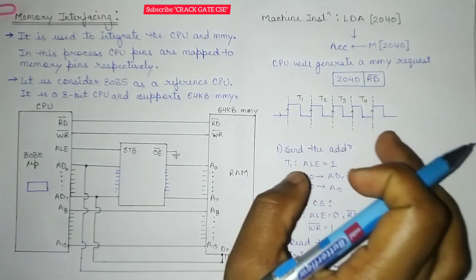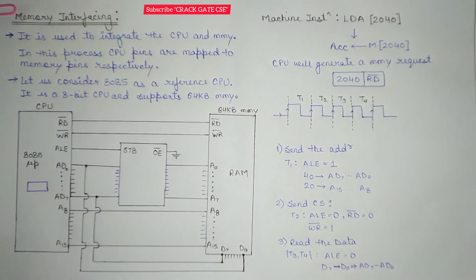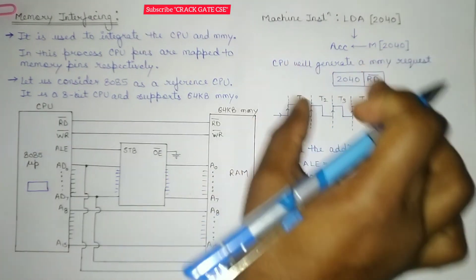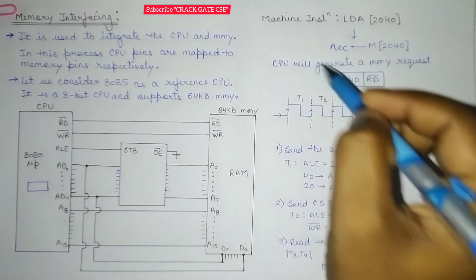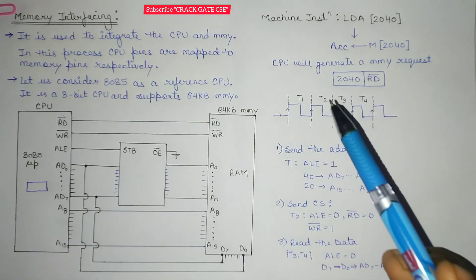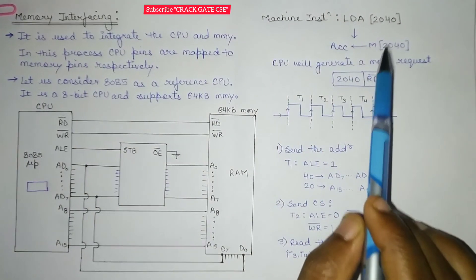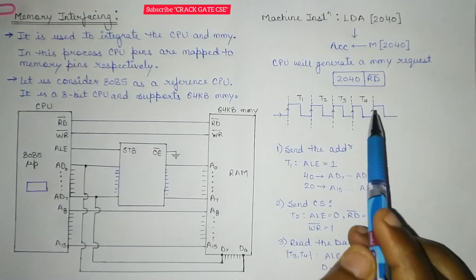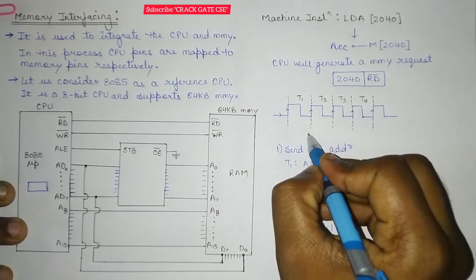There are some cycles required to perform any instruction. These cycles are known as machine cycles, because the execution of any instruction takes some CPU cycles to complete the operation. Whatever the time taken to execute a particular instruction — whether it is three cycles, four cycles, or any number of cycles — that is known as the machine cycle.